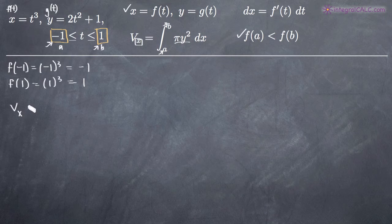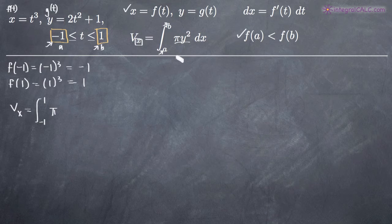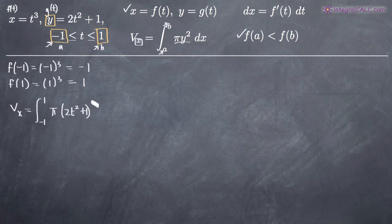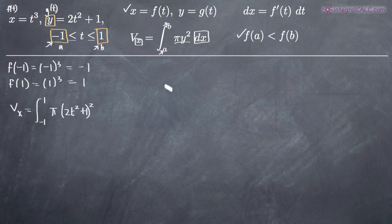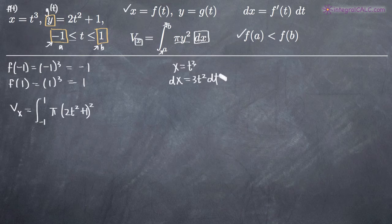So let's go ahead and start building our formula. Volume of revolution around the x-axis is going to be from negative 1 to 1 — we confirmed that direction by plugging in our limits. Pi is part of the formula and will always be there. For y squared, we grab from the equation for y: we plug in 2t squared plus 1, and square that. Then for dx, we take the derivative of x equals t cubed, which gives us 3t squared dt. So we're plugging in 3t squared dt for dx.